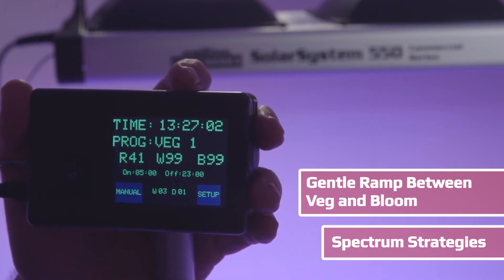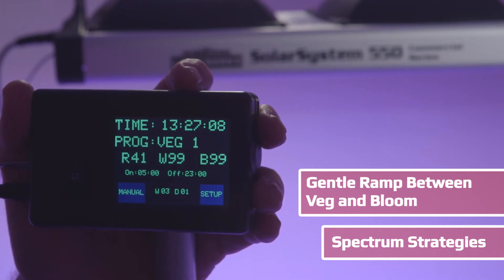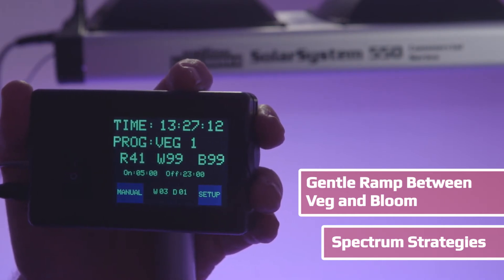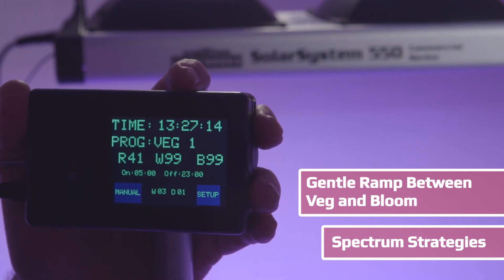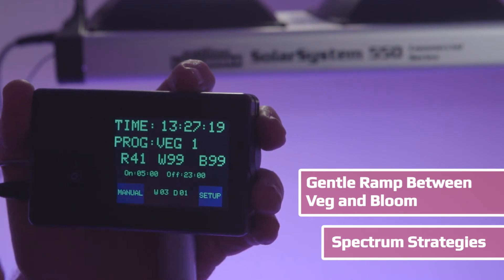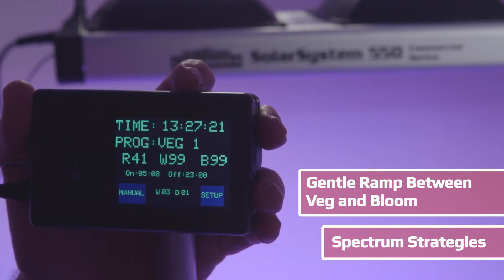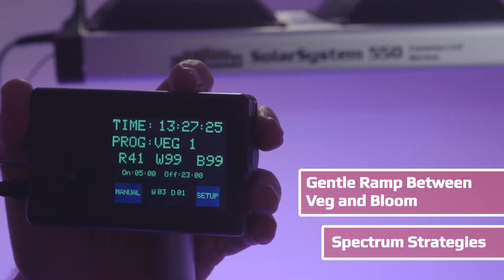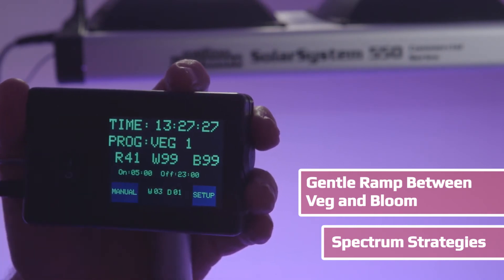By adding a pre-flower stage or even several pre-flower stages where the daytime is shrinking and the dark period is slowly increasing, by the time you get to 12-12 your plant has fully shifted to bloom rather than doing it all at once. You can set up different steps: early veg, veg, pre-flower, bloom, then final finishing, all by programming the spectrum and dark period.